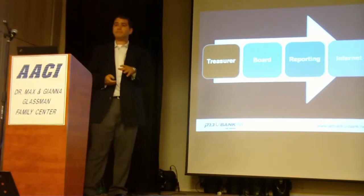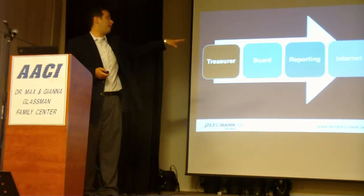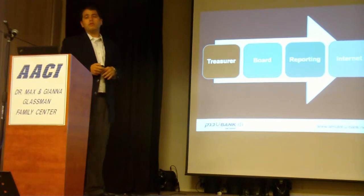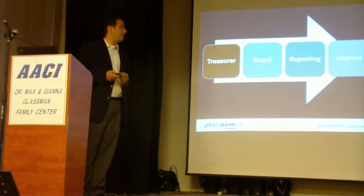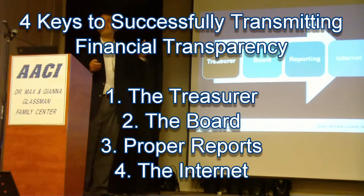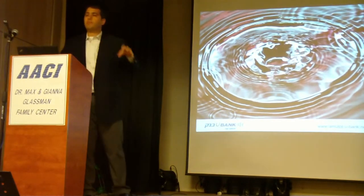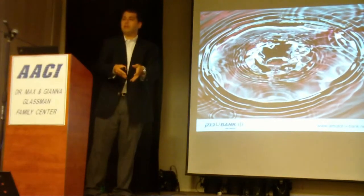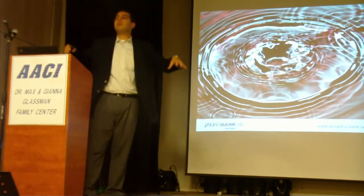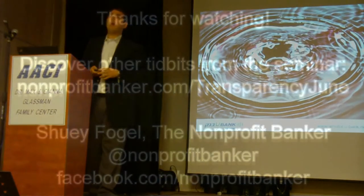They actually connect to each other in various ways. I would go so far as to say it's not even a linear relationship like I've shown here. The four building blocks to financial transparency are: treasure, board, reporting, and internet. It's more like splashing something in a puddle — there are ripples. You start internally, making sure everyone is on the same page from a financial standpoint, and then you'll see how clearly and easily you'll be able to transmit that financial transparency outward as well.